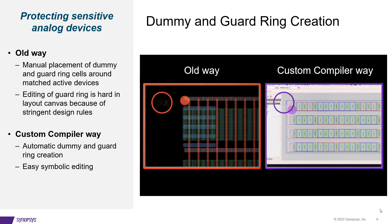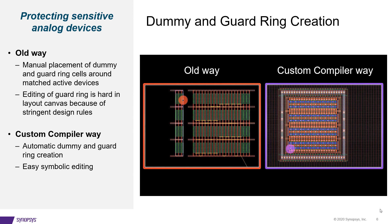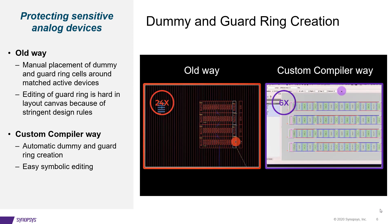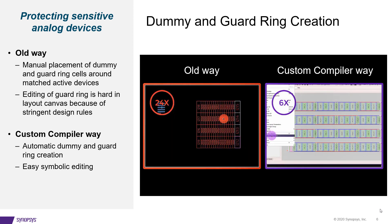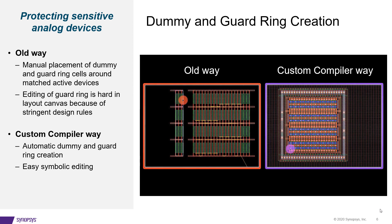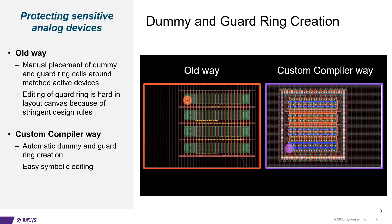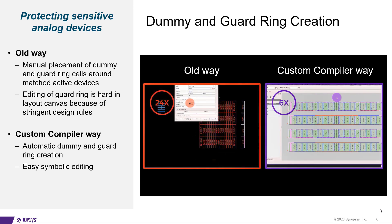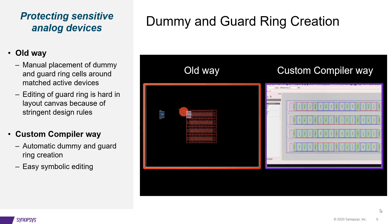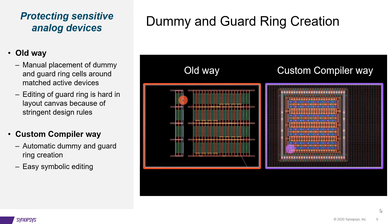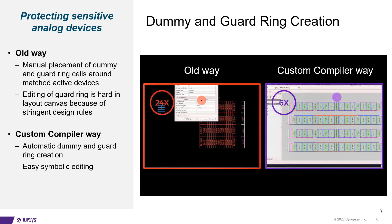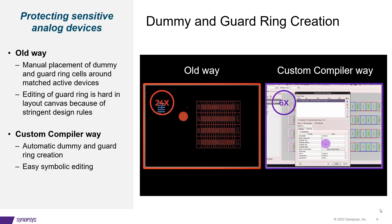Custom Compiler provides a way to automatically add dummies and guard rings while placing devices on the layout canvas. As shown in the video in the purple box, this is done using the symbolic editor. Layout engineers don't have to worry about spacing requirements for design rule correctness — the layout is correct by construction. In case of an ECO requiring device placement changes, the symbolic editor automatically restructures the dummies and adjusts the width and height of the guard ring without further editing.